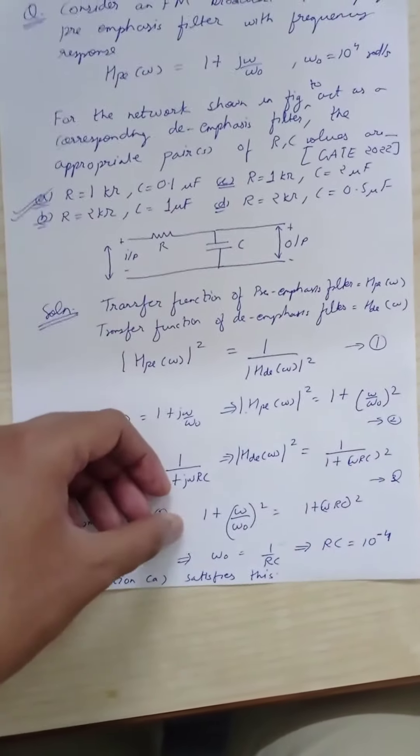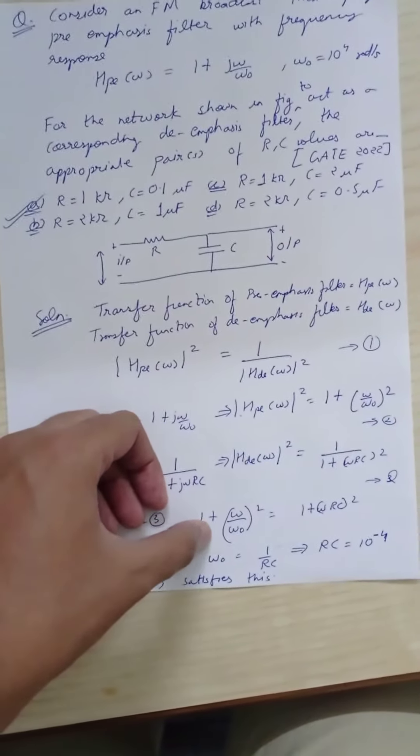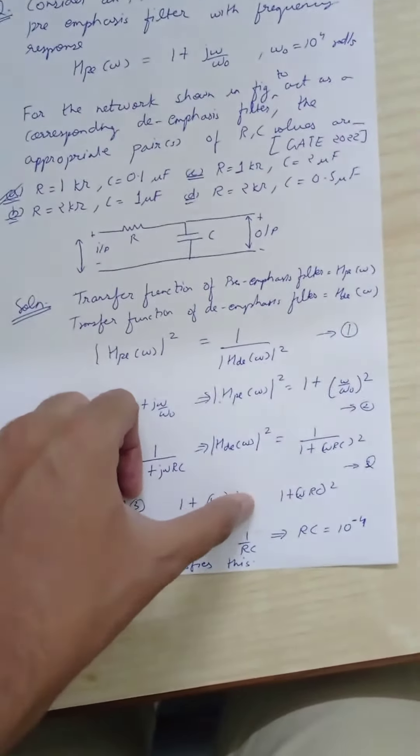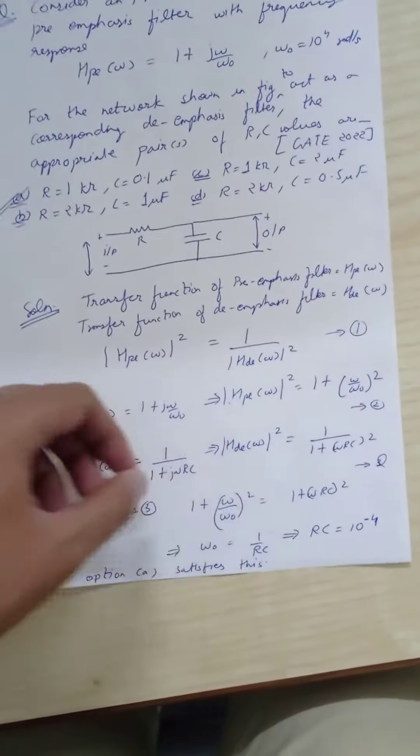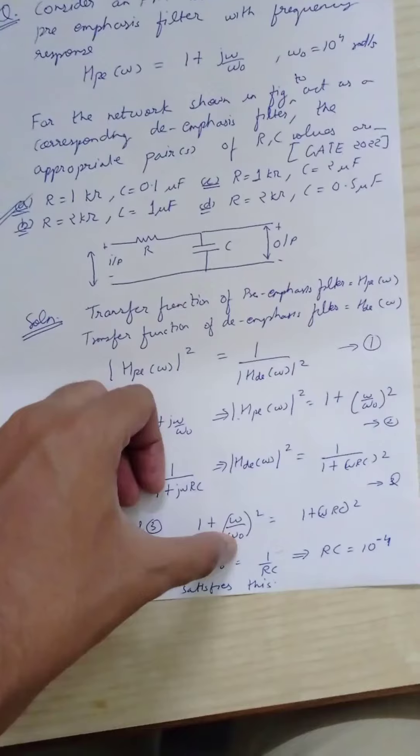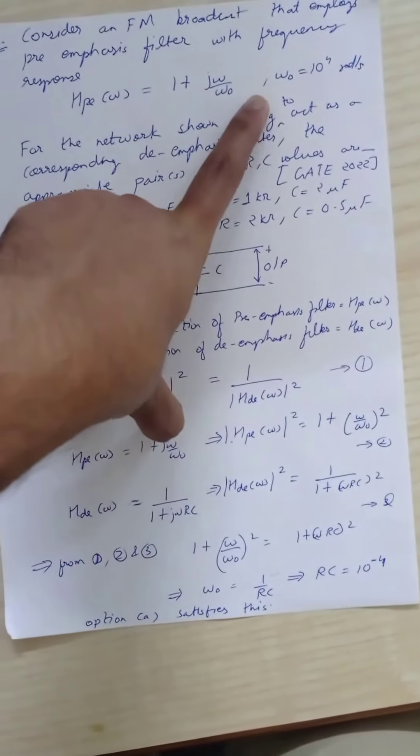From equations 1, 2, and 3, we have 1 + (ω/ω₀)² = 1/(1 + (ωRC)²). From this we get ω₀ = 1/RC, and ω₀ is given as 10⁴.